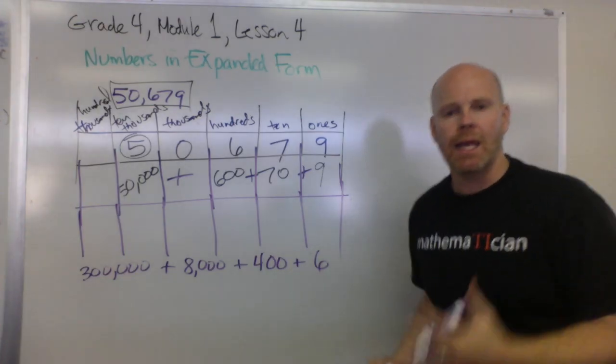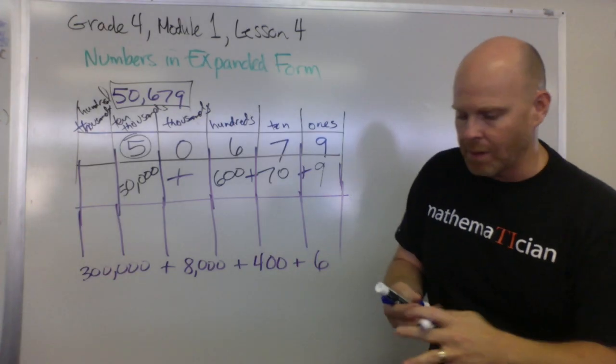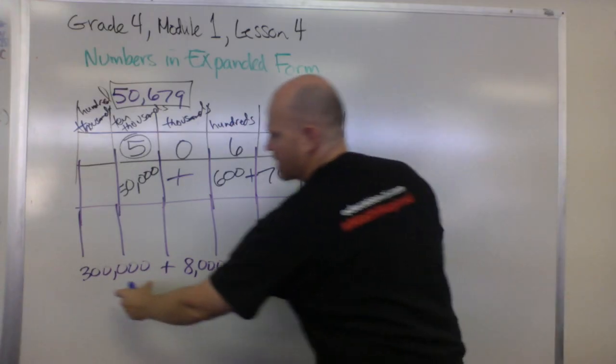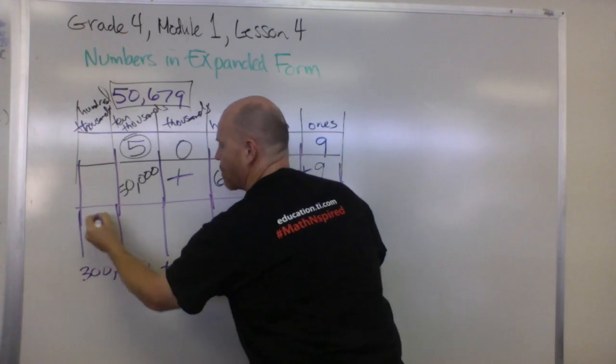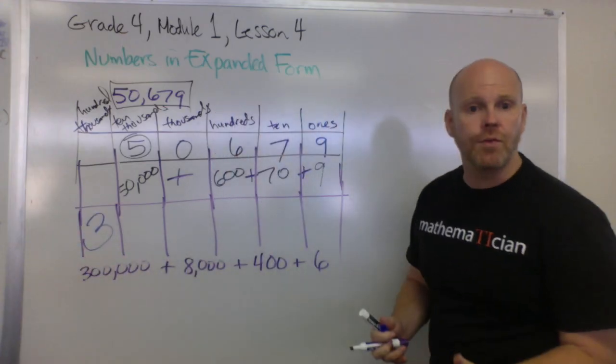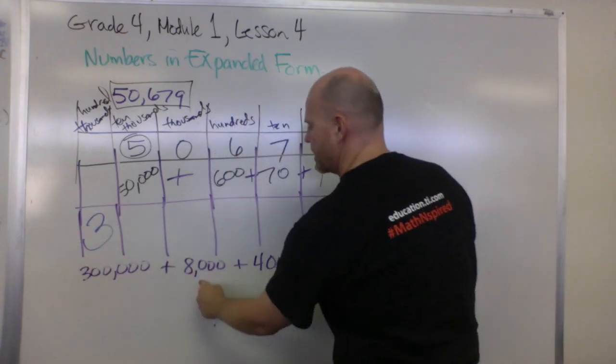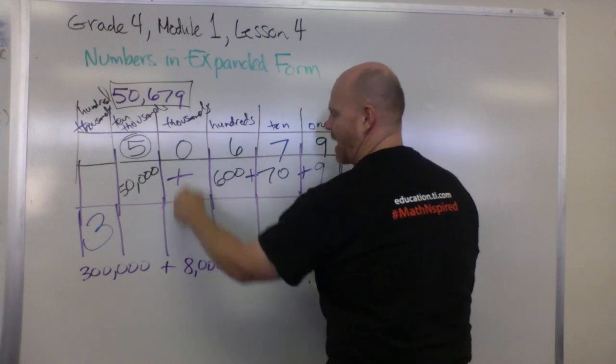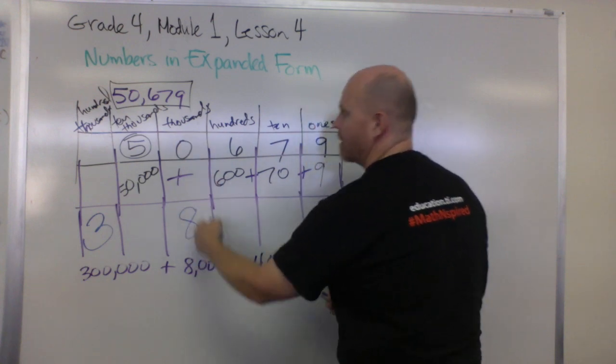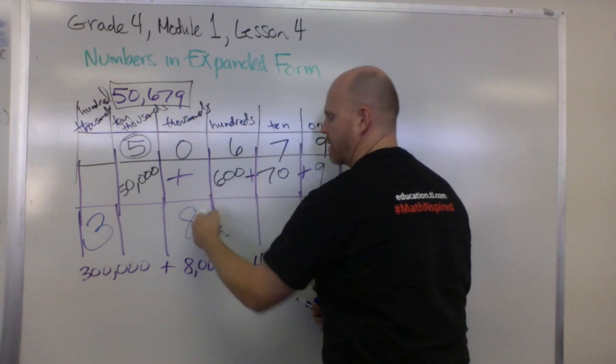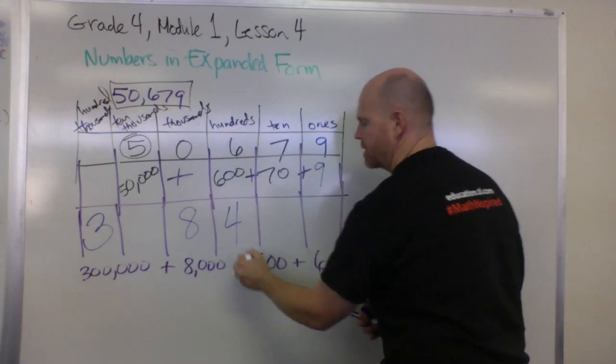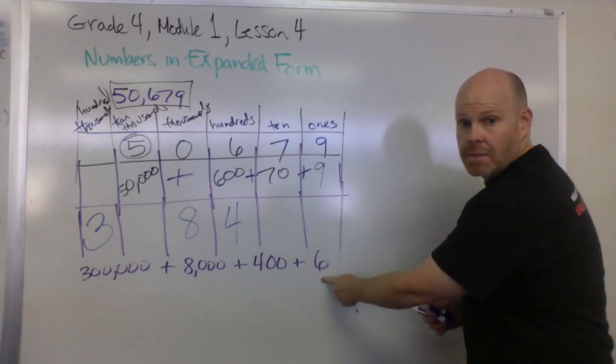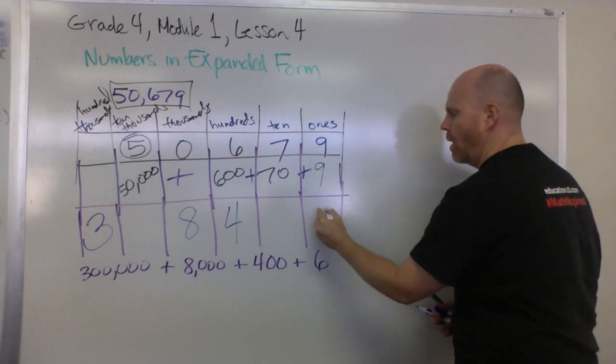So what does that mean in standard form? Well, if this says we have 300,000, that means we have three copies of the hundred thousands. This 8,000 means we have eight copies of the thousands. Here 400 means we have four copies of the hundreds, and then this six means we have six copies of the ones.